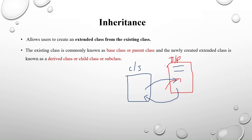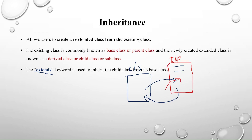We achieve this using the `extends` keyword. The syntax is: `class ChildClassName extends BaseClassName`. We use this keyword while inheriting a class. Inheritance provides reusability and also allows overriding of properties and methods from the base class.